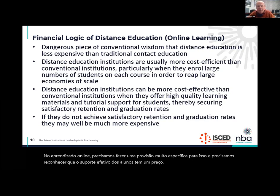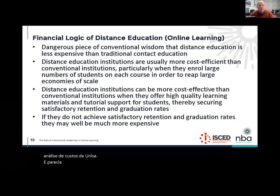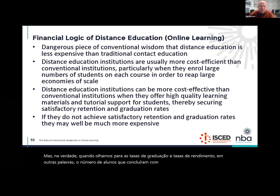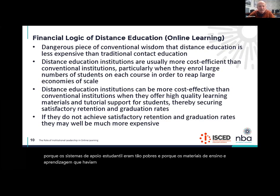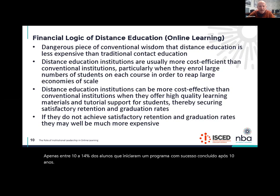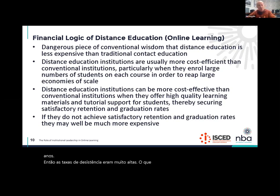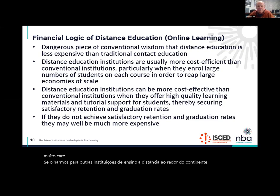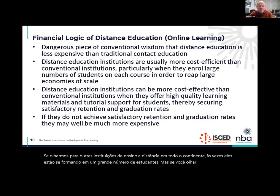When I started my career in around 1992, we did a cost analysis of UNISA and it looked like UNISA was very cheap. But actually, when we looked at graduation rates and throughput rates — the number of students who successfully completed a program — what we discovered is that because the student support systems were so poor and because the teaching and learning materials were not very good quality, only between 10 to 14% of students who started a program would successfully complete after 10 years. The dropout rates were very high. What that means is that if you look at the cost of delivering a graduate, UNISA ended up being a very expensive mode of delivery.